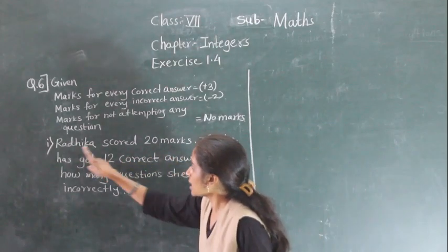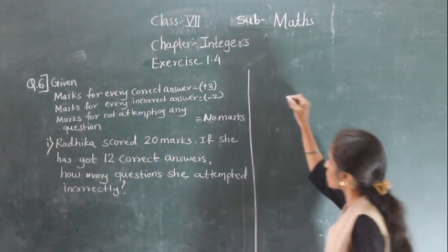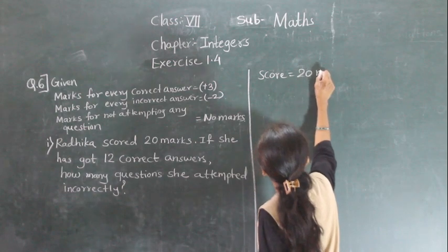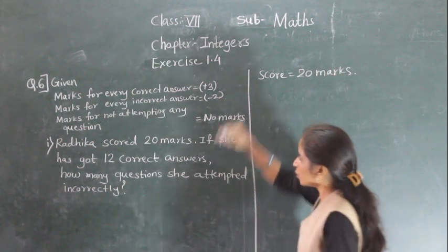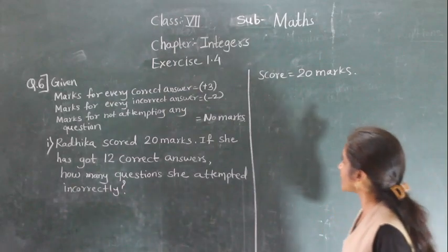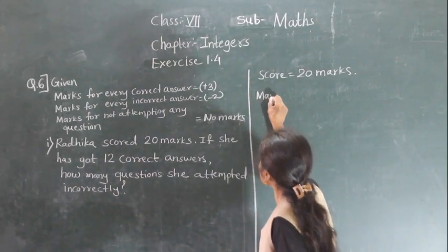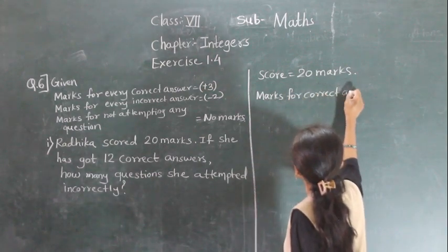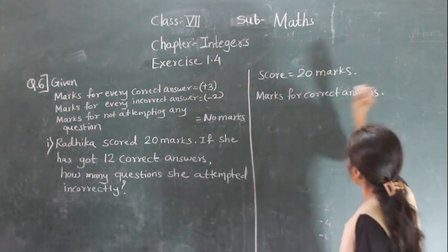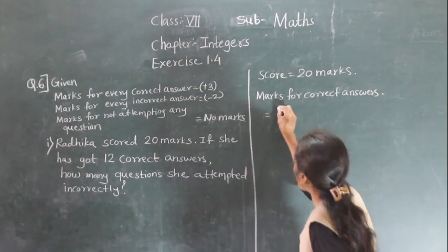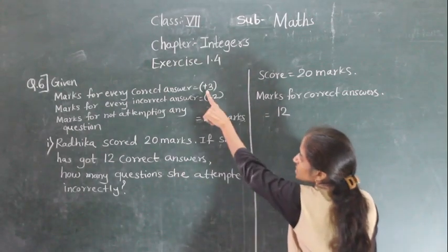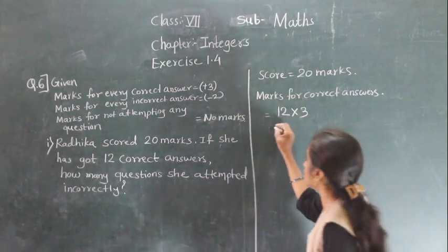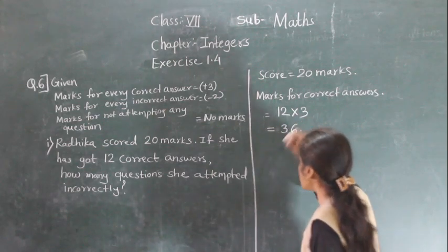Radhika's score is 20 marks. If she has got 12 correct answers, marks for correct answers: 12 correct answers at 3 marks each — 12 times 3 equals 36 marks for correct answers.